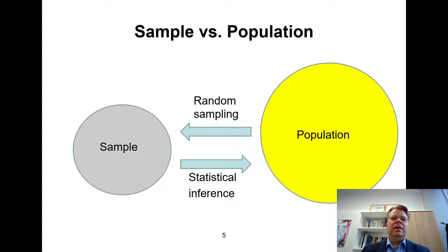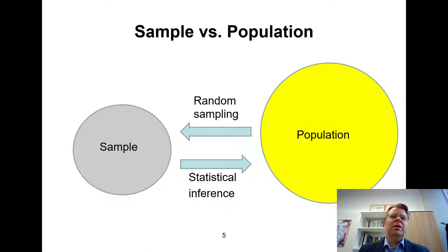Random sampling has a critical role. Without random sampling, we cannot necessarily apply probability theory to do statistical inferences.